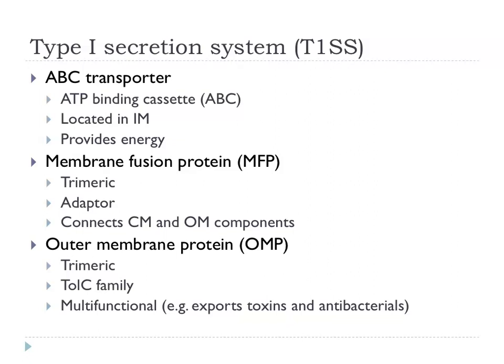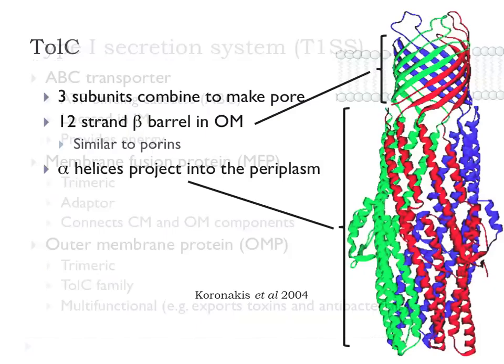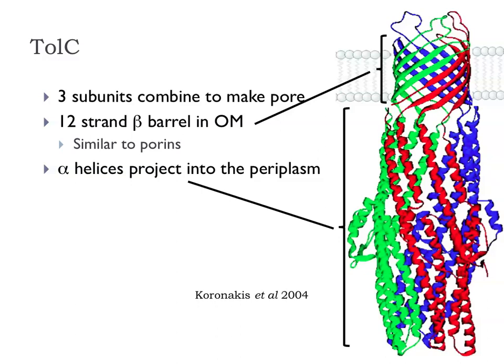There is a membrane fusion protein — a trimeric protein that acts as an adapter connecting components in the cytoplasmic membrane with those in the outer membrane. Then there is an outer membrane protein, TolC — the archetype of this group — though there is a wide variety of different members of the TolC family involved in type 1 secretion; they form trimers in the outer membrane. These systems are quite promiscuous in what they export — they can export protein toxins and also antibacterial substances.